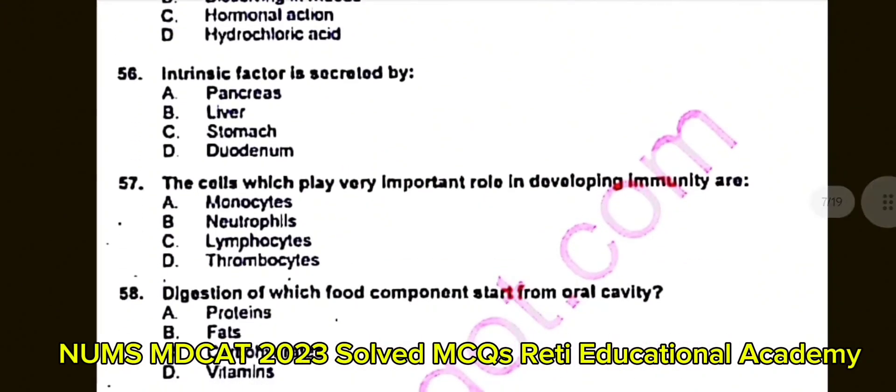Question number 57: The cells which play a very important role in developing immunity are? A. Monocytes. B. Neutrophils. C. Lymphocytes. D. Thrombocytes. The correct answer is C: Lymphocytes.